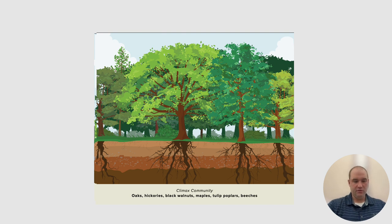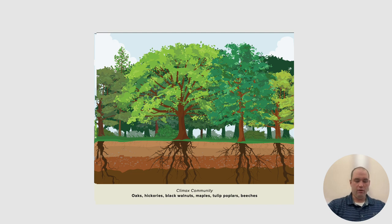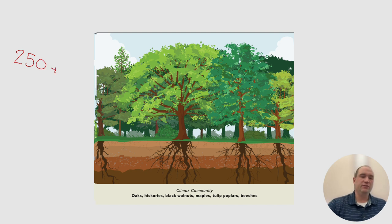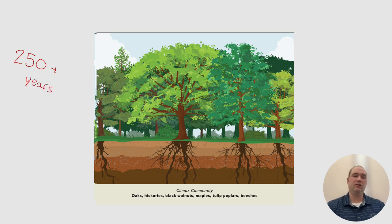Finally, we enter our climax community, which in this case features our very stable plants — oaks, hickories, black walnuts, maple, tulips, poplars, and beeches — all big giant trees. This whole process takes upwards of 250-plus years, so it's not something that occurs overnight. It takes a large amount of time to develop.